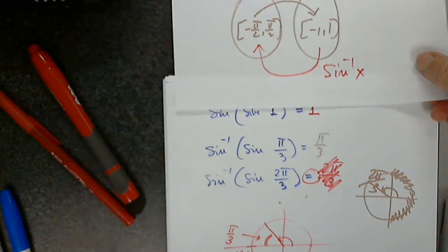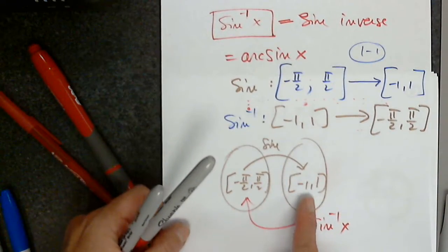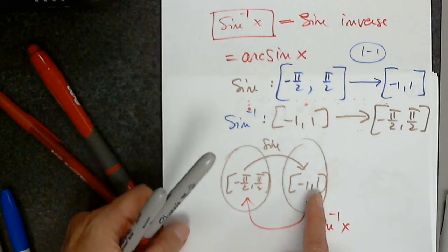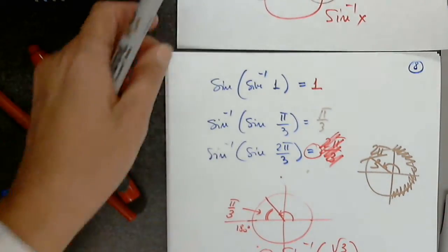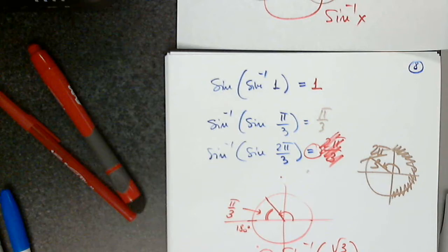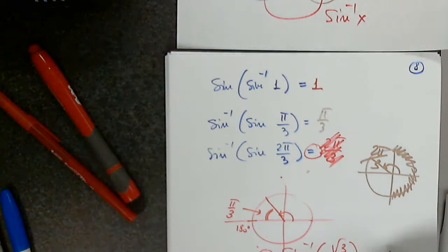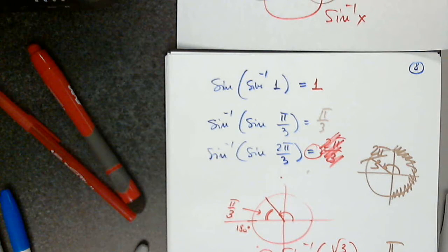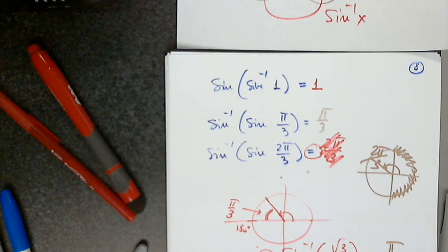Can I apply sine inverse to the square root of 3 over 2? Yes, it's a number between 0 and 1. The answer is pi over 3. We have to understand: when we apply sine to an angle, we get a number; when we apply sine inverse to a number, we get an angle.